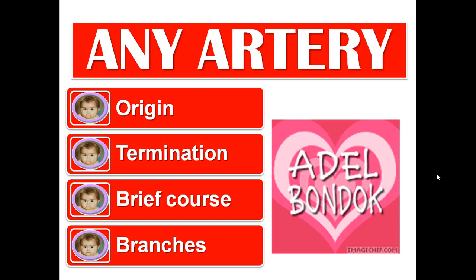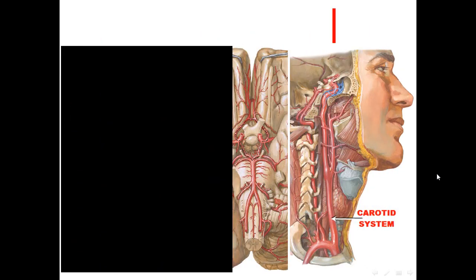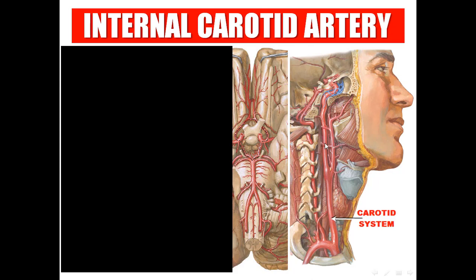The origin of the internal carotid artery: it is one of the two terminal branches of the common carotid artery. Where? Opposite the upper border of C3 and C4 vertebrae.